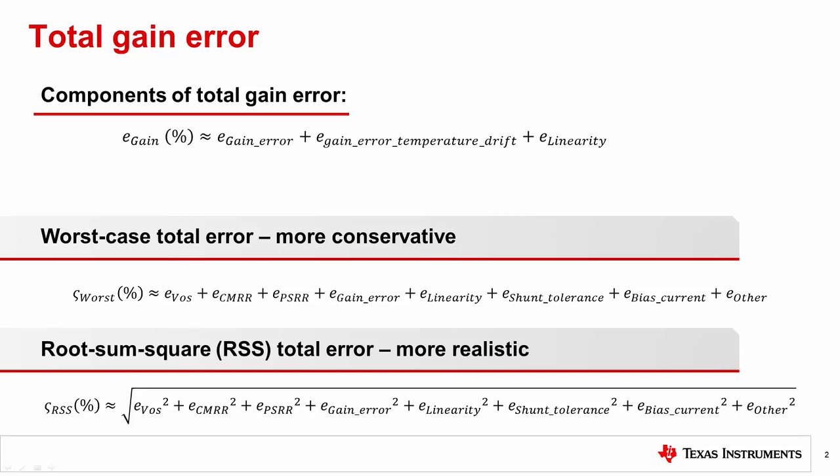Gain error differs from offset error in that it contributes the same amount of percentage error to the total system error over the linear dynamic range. In general, gain error is the dominant error type at high input signal levels.